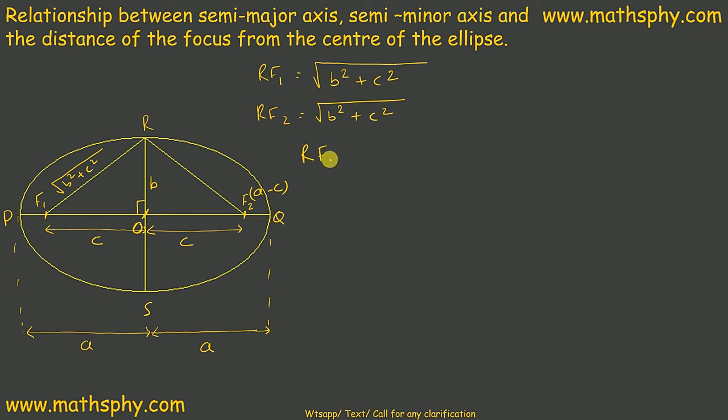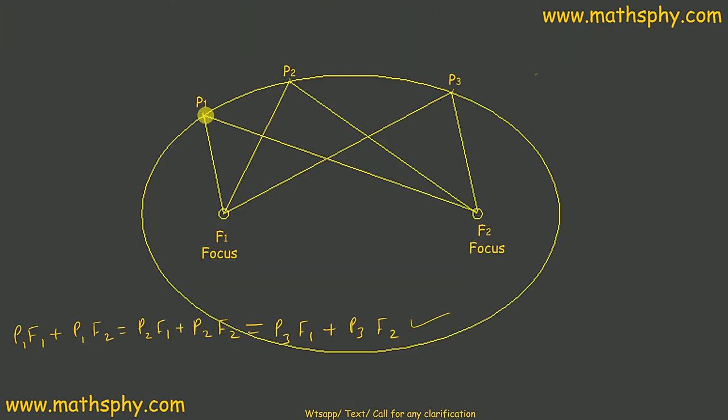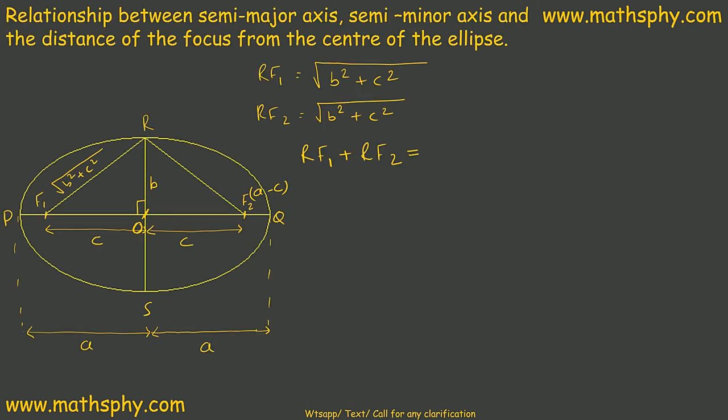Now, RF1 plus RF2 will be equal to, what we have studied in the first place, all these points, P1F1 plus P1F2 is equal to P2F1 plus P2F2 equal to P3F1 plus P3F2. Likewise, here, RF1 plus RF2 will be equal to QF1 plus QF2.